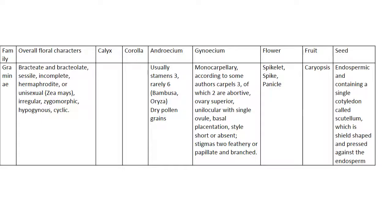Calyx and corolla are either absent or modified. Androecium has usually three stamens, rarely six in the case of Bambusa and Oryza. Dry pollen grains are observed here.